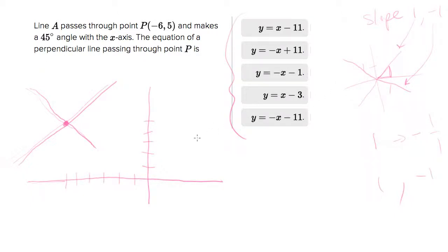So let's start counting over. We're at (-6, 5). And as we go up, we're going to go over 1, up 1, over 1, up 1. So we need to go over 6. We're at -6. We're going to go 6 over: 1, 2, 3, 4, 5, 6 over.